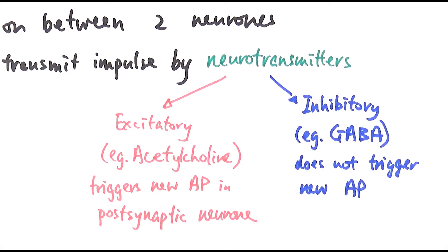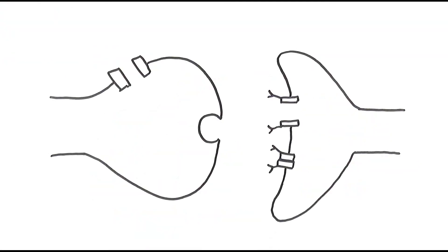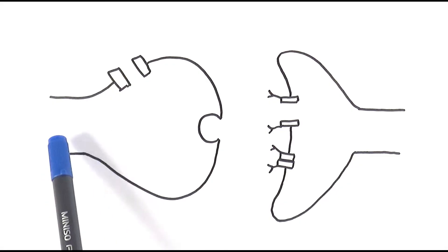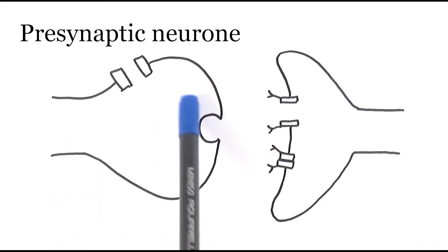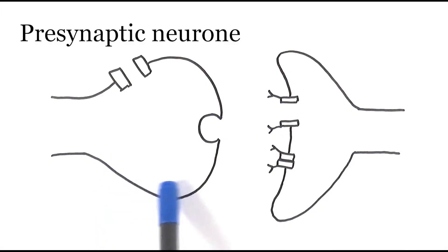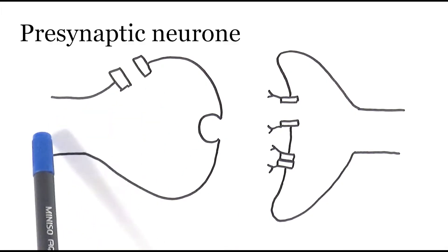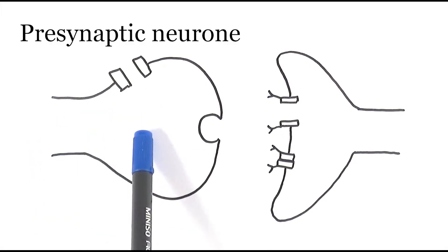Now let's look at how the cholinergic synapse actually works to trigger a new action potential. First, it's helpful to know the structures involved. This is what we call the pre-synaptic neuron, or at least the ending of the pre-synaptic neuron — that's where the impulse comes in.